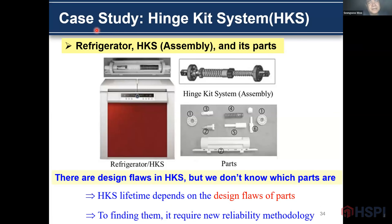This is another case study of the hinge kit system. This is the refrigerator and this is the hinge kit system. In the kit system, you can see several parts: cover, damper, spring, and housing. There are a lot of design flaws in the hinge kit system and we don't know which parts are problematic. Life target of the kit system depends on the design flaw of the part. To find them, it requires the newly developed methodology.